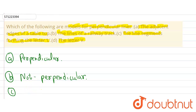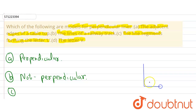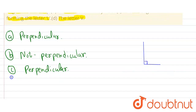Now let's see Part C, which is the line segments forming the letter L. As we can see here, the letter L has adjacent edges that are perpendicular to each other. Therefore, Part C represents perpendicular lines.